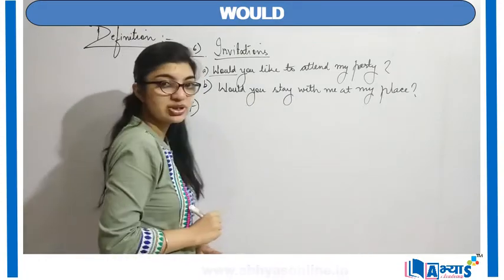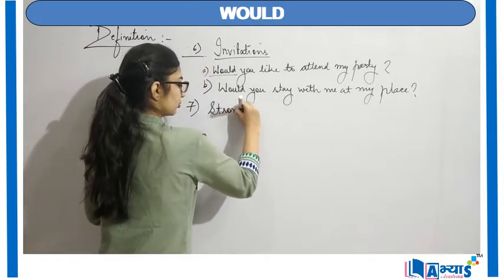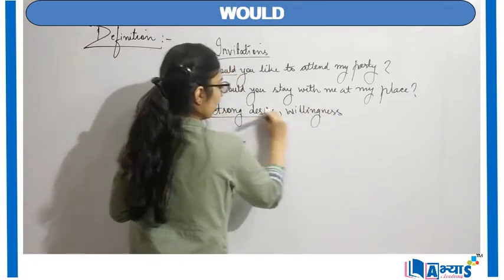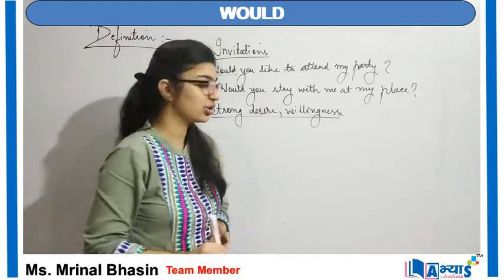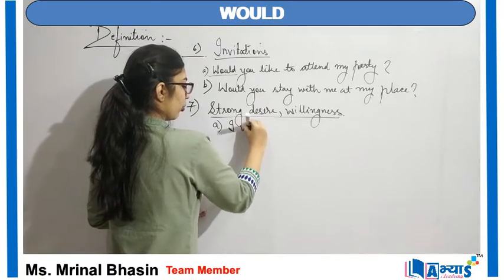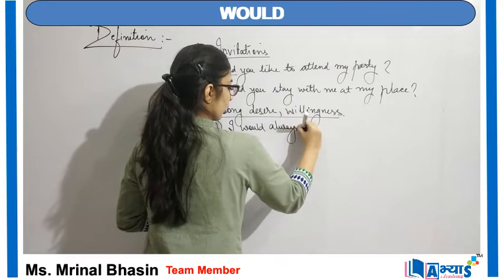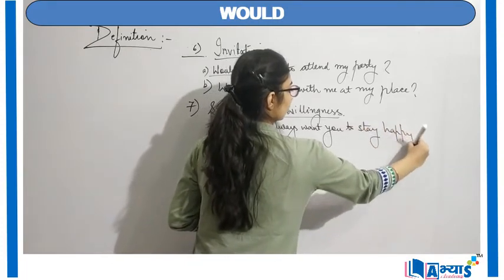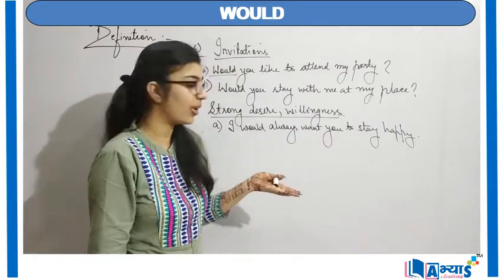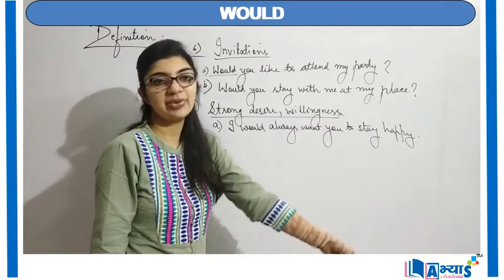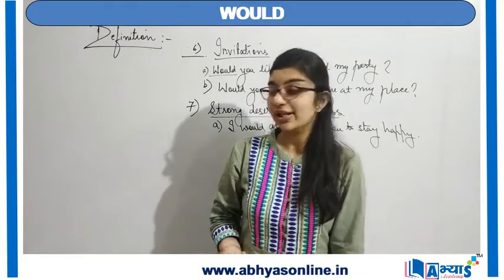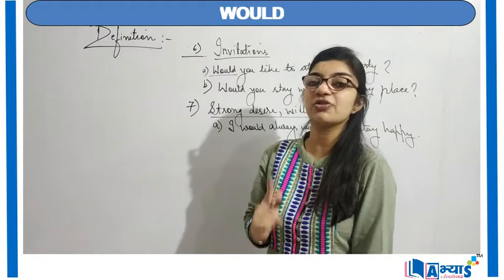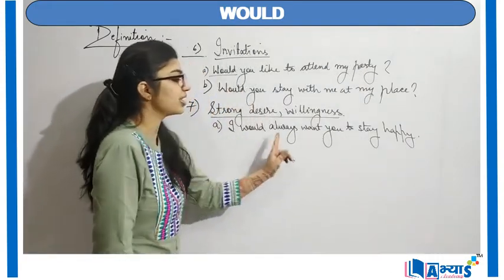Another place where 'would' is used is for some kind of strong desire or willingness. When you strongly desire something, we make use of 'would.' For example: 'I would always want you to stay happy.' Now this is my wish, my prayer for someone — I would always want you to stay happy. This is my strong desire, my strong willingness that I want that person to always remain happy.